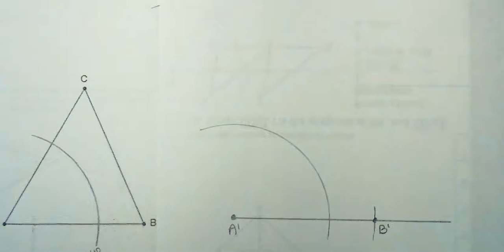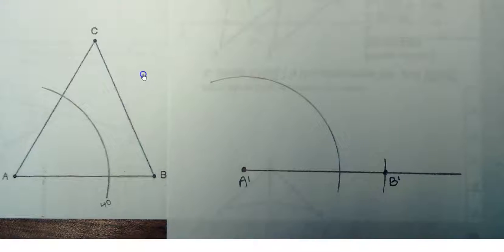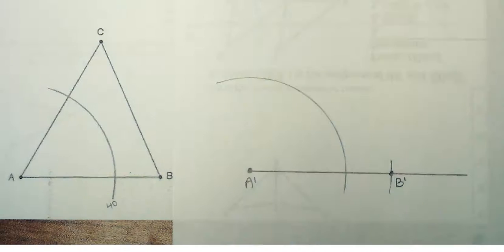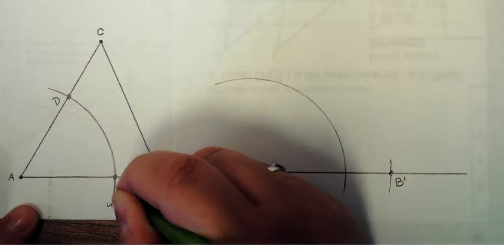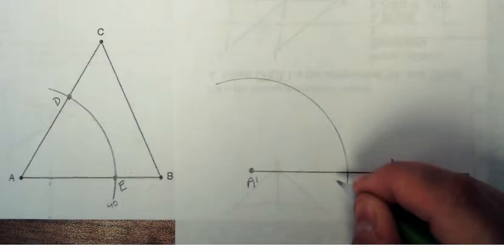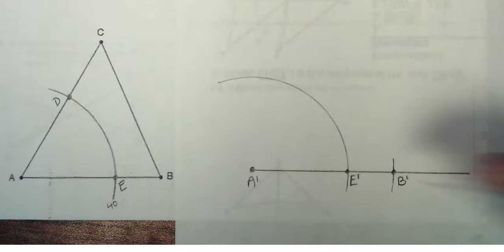Now I'm going to make a mark. Just for a reference, I'm going to call this D and E. So I already have E prime. I need to figure out where D prime should go.